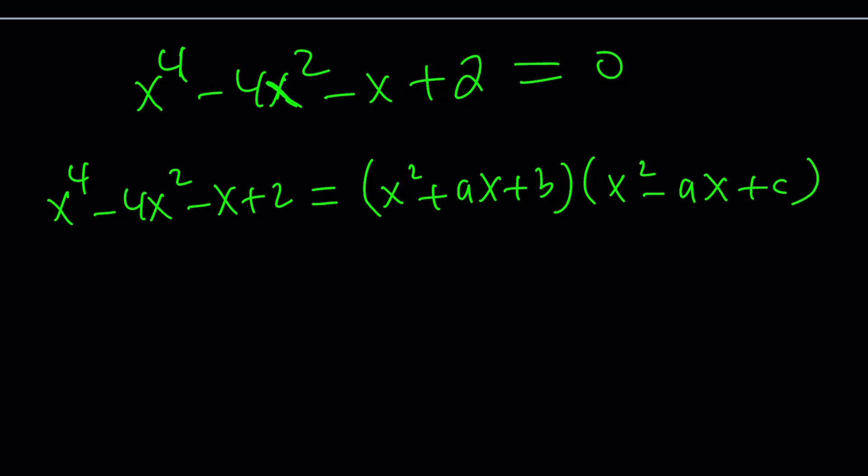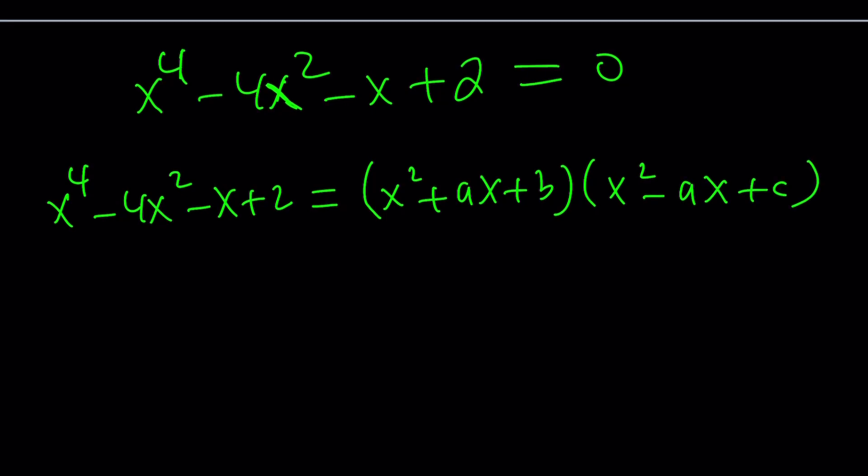Now, why did I pick ax and negative ax for the linear terms? Because when you distribute, you're not going to have an x cubed term. They're going to cancel out. And notice that we don't have x cubed here. So this is a depressed quartic, a quartic in depression, right? So that's nice because missing the x cubed term is a good thing.